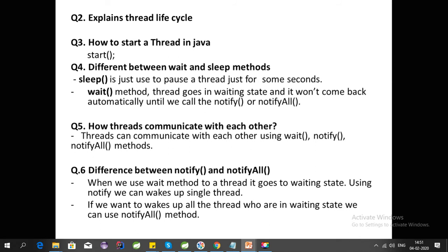The next question is the difference between wait and sleep. The sleep method is used to pause a thread for some time — for example, pausing for one hour. With the wait method, a thread goes into a waiting state and does not come back automatically; it stays waiting until we call notify or notifyAll. Whenever we want to pause a particular thread we use wait, and to wake it up we use notify.